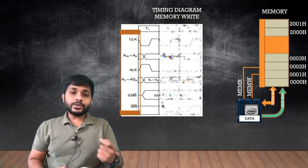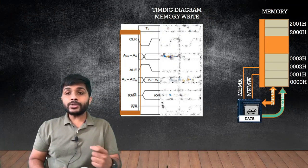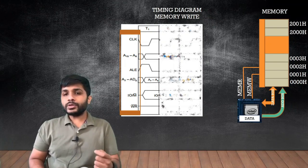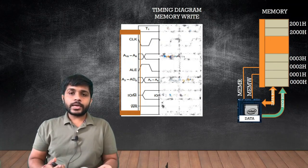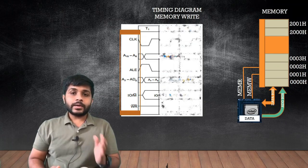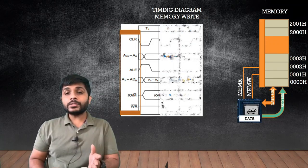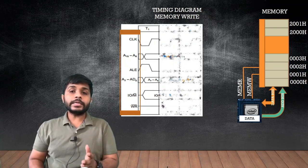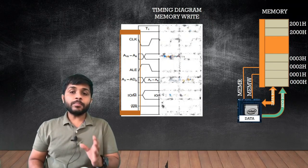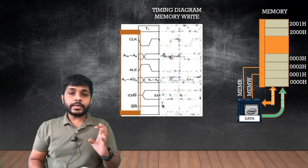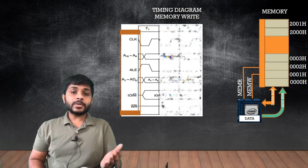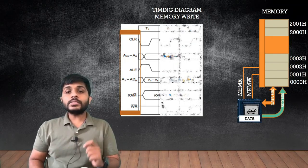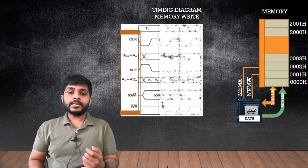There is also AD0 to AD7, which is a multiplexed bus. To use AD0 to AD7 as A0 to A7, we will use the address latch enable signal. The lower order bus AD0 to AD7 is multiplexed and can be used either as A0 to A7, which is the lower order address bus, or as D0 to D7. To select between address bus and data bus, we use the ALE signal.